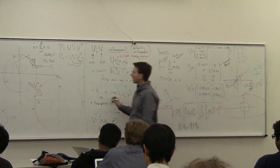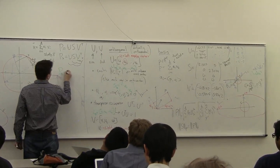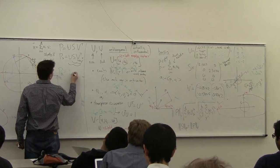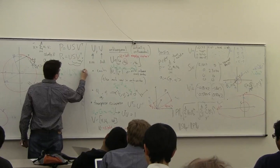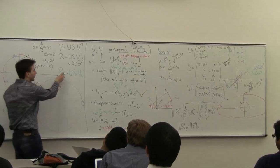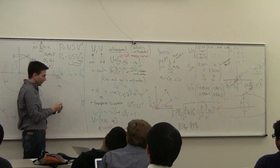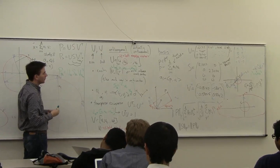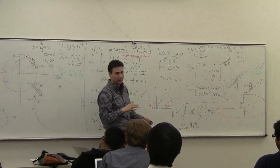And so then you can get back a matrix PK, which is going to be UK, SK, VK transpose. And this is going to be very similar to P, but it's going to have all of the points. You're going to solve all your points, but they're going to lie in this lower-dimensional subspace.